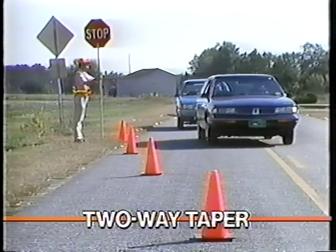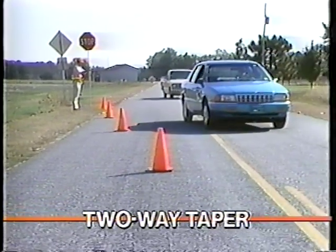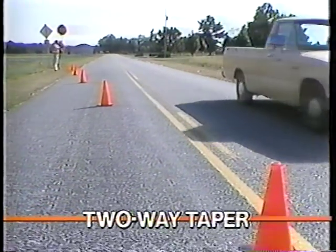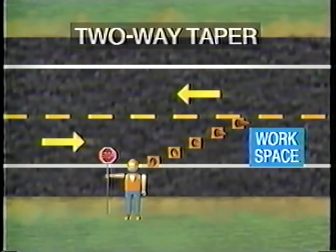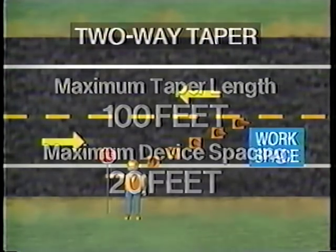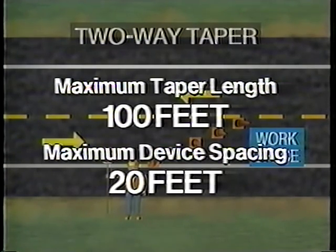The two-way traffic taper is used in advance of a work area that occupies part of a two-way road when the remainder of the road is used alternately by traffic in either direction. A short taper is used to slow down traffic by giving the appearance of restricted alignment. One or more flaggers or temporary traffic signals are used to assign the right-of-way. Two-way traffic tapers should be a maximum of 100 feet long, with channelizing devices spaced at a maximum of 20 feet to provide clear delineation of the taper.